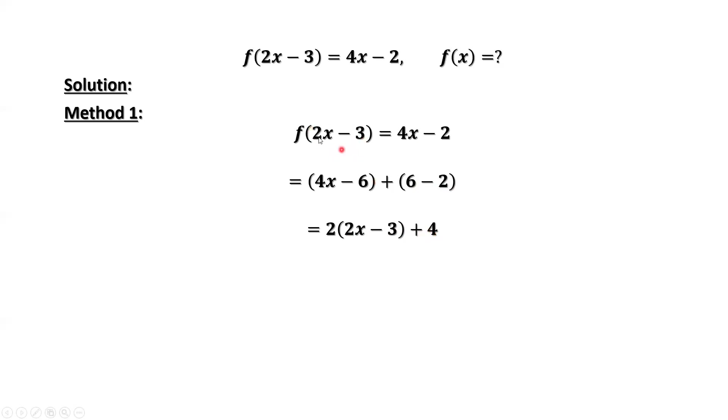We could replace 2x minus 3 here by x. Consider 2x minus 3 is the x. Right-hand side of this part is the x. Then we have f of x equals 2 times x plus 4. This part is x. This part is x. They are the same.